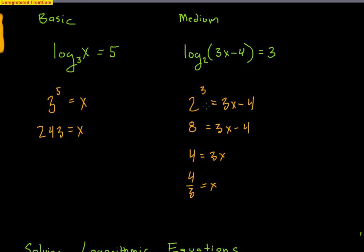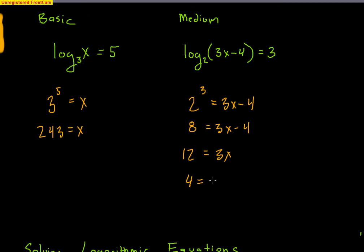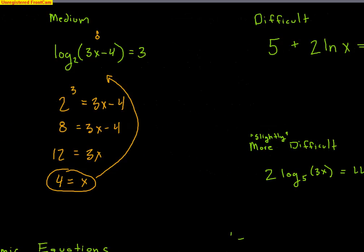Looking at this example, I got 8 inside the log — 2 × 2 × 2 is 8. I made a mistake though: I subtracted 4 when I should have added 4 to both sides, giving 12. Then dividing by 3 gives a nice value of 4. Always plug back in to check: 3 × 4 = 12, 12 − 4 = 8 — no negative inside the log, so we're fine.